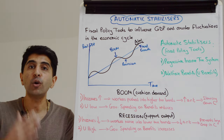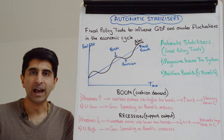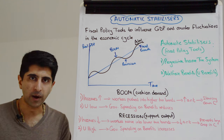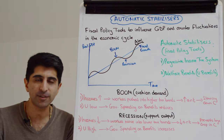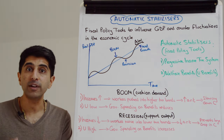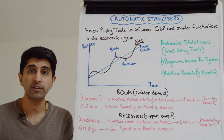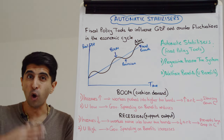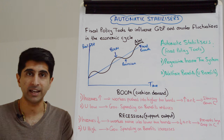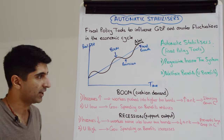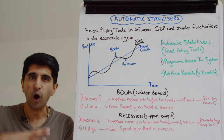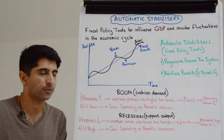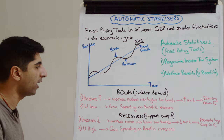So aggregate demand is still going to rise but not as much as it would have done otherwise, and that's going to control the extent of the boom. Hopefully, demand-pull inflation is not going to overshoot the target significantly, and the economy is not going to overheat as much as it would have done otherwise.